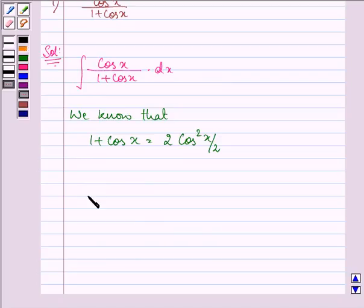So using it, adding 1 and subtracting 1 from the numerator, we have 1 plus cos x minus 1 divided by 1 plus cos x dx.